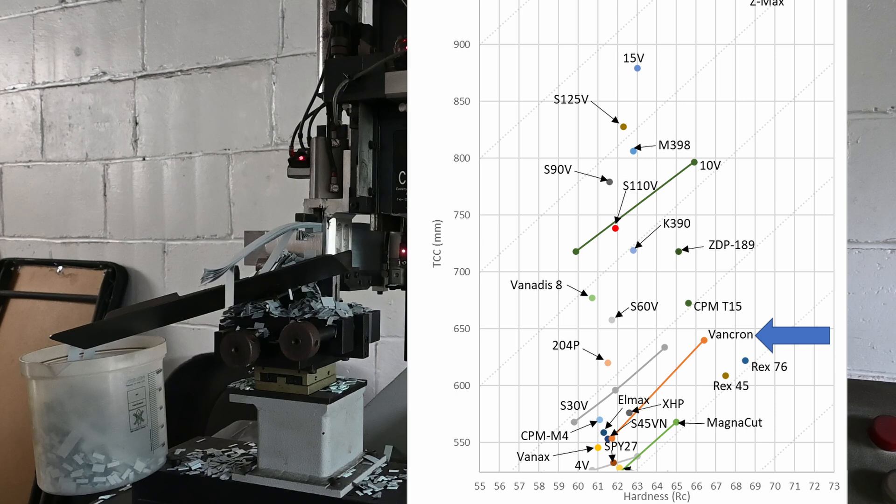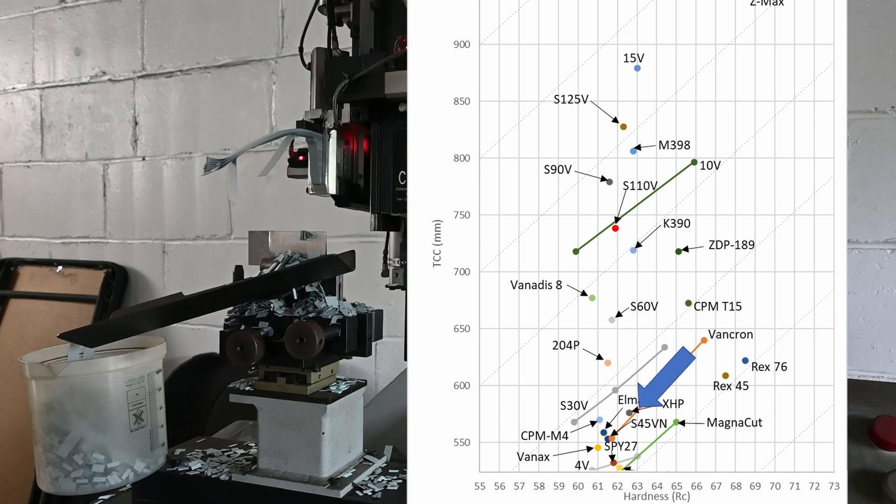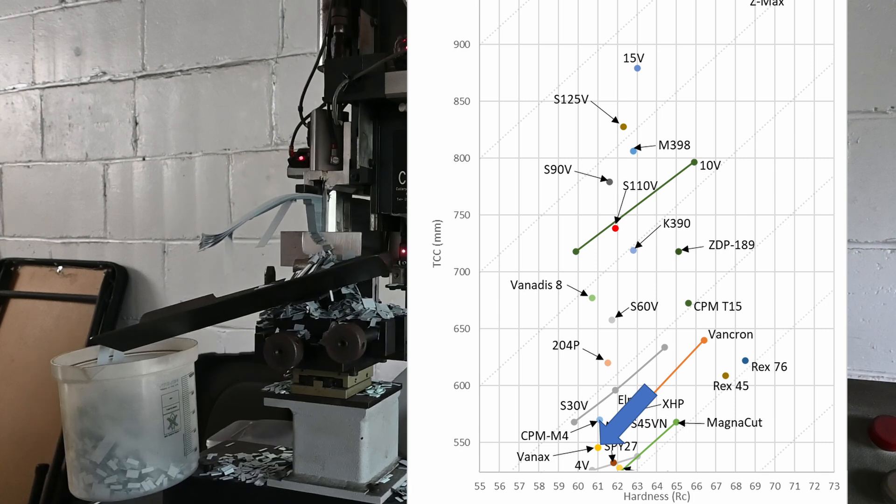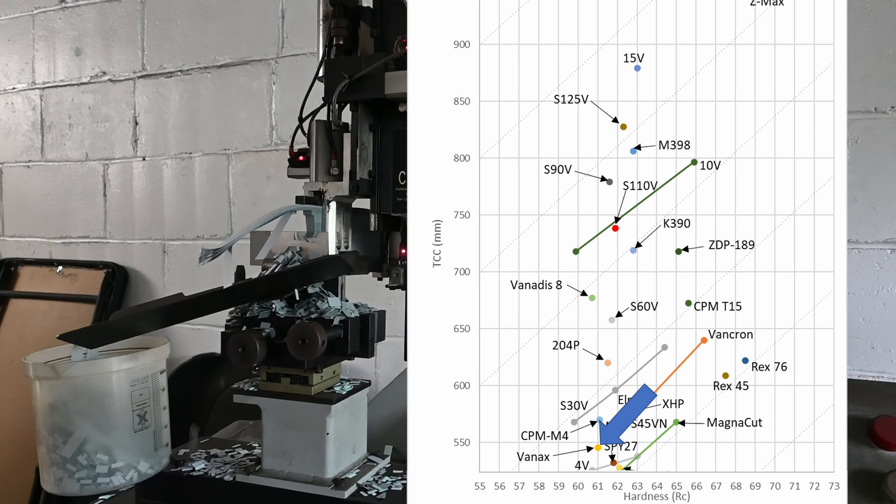In fact, if you compensate for hardness, VANCRON performs similarly to VANAX, another high nitrogen steel made by Uddeholm with only 3.5% vanadium in it. So why should I have anticipated this odd result?